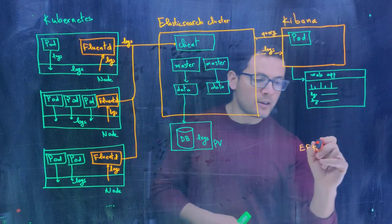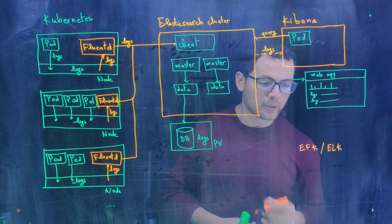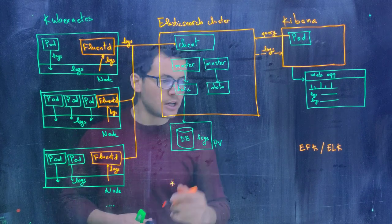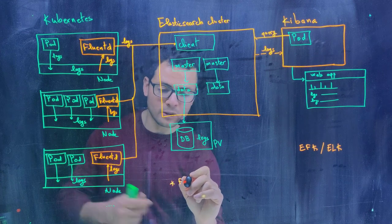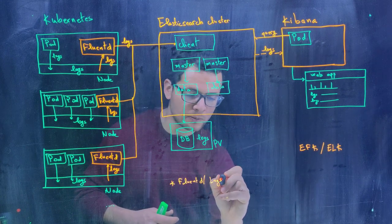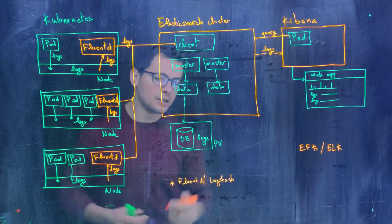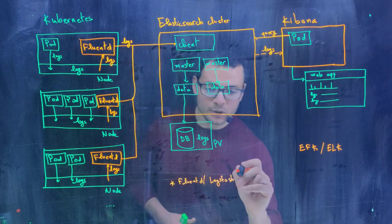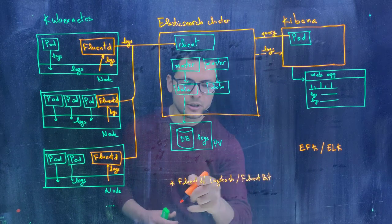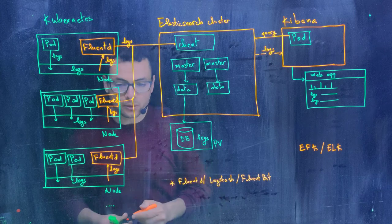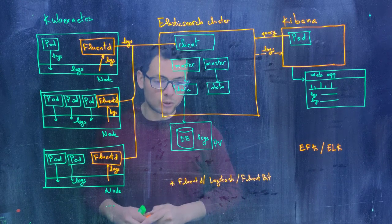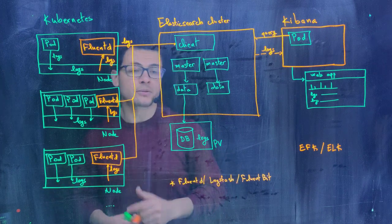There is also another suite called ELK that is sometimes discussed. The difference between the two is that EFK uses Fluentd for collecting the logs, while ELK replaces the F with L — for Logstash. Fluentd is not the only tool for collecting logs; there is also Logstash and Fluent Bit, which is a very lightweight version of Fluentd that can replace it for log collection. Fluentd is a CNCF graduated project and is the one recommended by CNCF to be used specifically in a Kubernetes cluster.